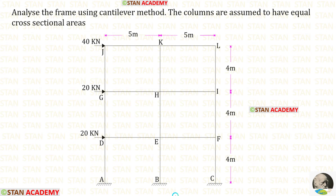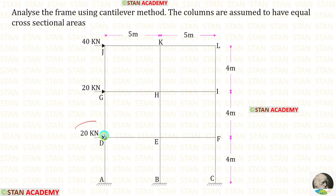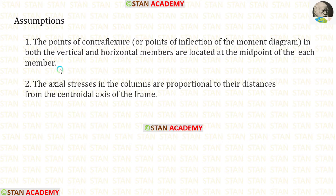Hello everyone, today we are going to analyze this frame using the cantilever method. In this frame, the columns are assumed to have equal cross-sectional areas. This is a three-story, two-bay frame. We have three lateral point loads: 40 kilo-newton at point J, 20 kilo-newton at point G, and 20 kilo-newton at point D.